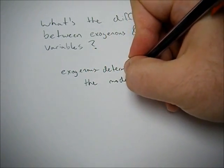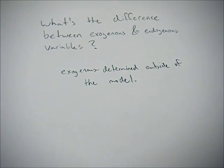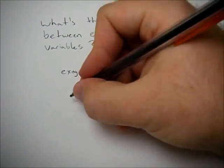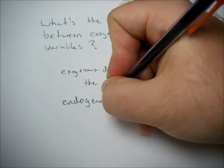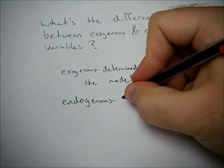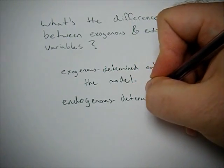And these are my definitions. If you look it up in the textbook, you'll probably get something different, but this is how I remember them. So exogenous, determined outside of the model. Endogenous, determined within the model.